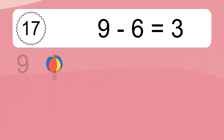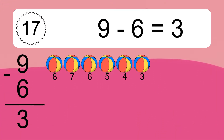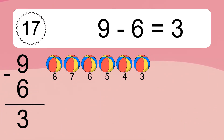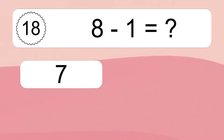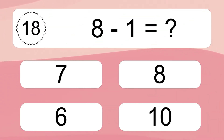19 minus 6 equals 3. Let's count it. 8, 7, 6, 5, 4, 3. 8 minus 1 equals what?